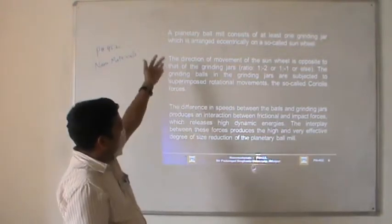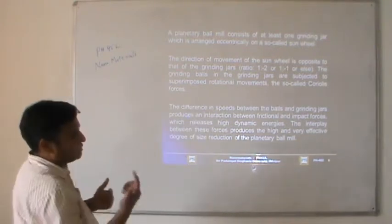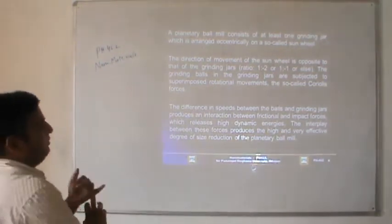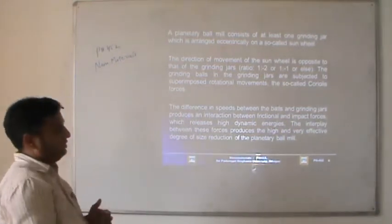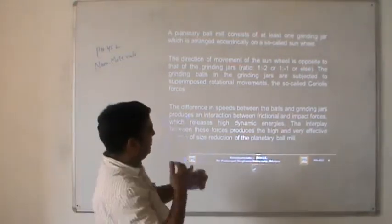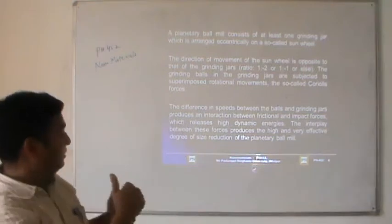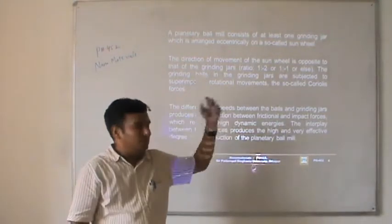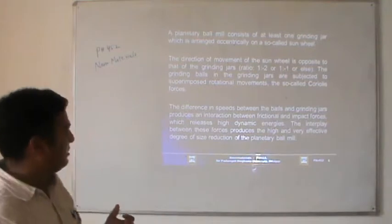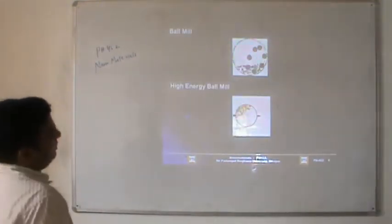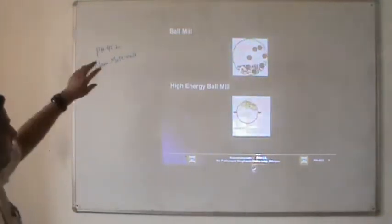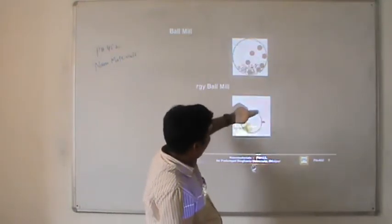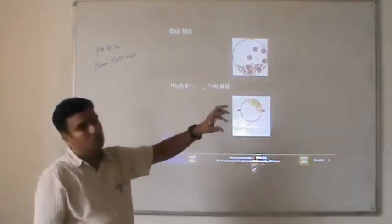The grinding balls in the grinding jar are subjected to superimposed rotational movements — the so-called Coriolis forces. The difference in speed between the ball and the jar produces an interaction between frictional and impact forces, which release high dynamic energies. This interplay produces a high and very effective degree of size reduction. The ball mill has three different layers: the ball mill itself, the jar, and the pulley system of the sun wheel. The ball and jar move at different speeds, and the interaction with the powdered sample produces high frictional and impact force.